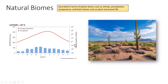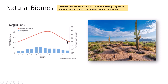Every time we discuss a biome we're also going to discuss precipitation amount and temperature. You will often see double-axis graphs corresponding to data for one of the biomes. You typically have the months of the year along the X-axis, and on the Y-axis it shows you monthly precipitation in millimeters or centimeters. The key shows that average temperature is depicted with an orange line and monthly precipitation with blue bars.